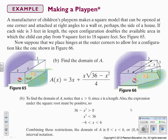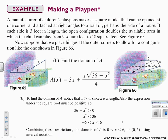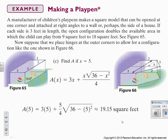The domain of A is anything that will keep the expression under the root positive. We set 36 minus x squared greater than 0, which gives x squared less than 36, so x is between negative 6 and positive 6. But since we can only have positive values, the domain is 0 less than x less than 6. When we plug in x equals 5 and simplify, we get 19.15 square feet.